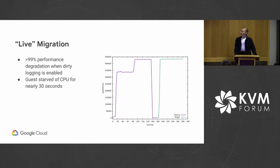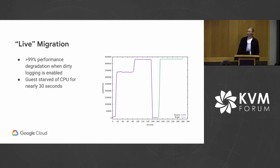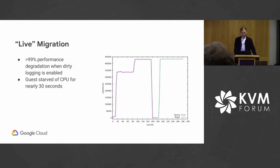When running on the initial kernel, we saw something that wasn't quite suitable for live migration. We saw a rather significant degradation in performance when we enabled dirty logging, on the order of around 99%. This was rather unfortunate. And even worse, the brownout period was around 30 seconds. So effectively, we killed the VM.